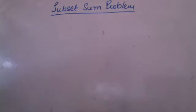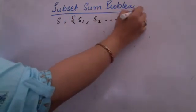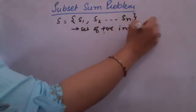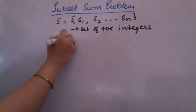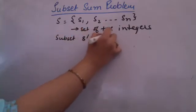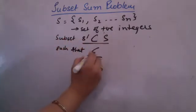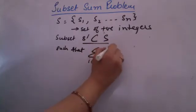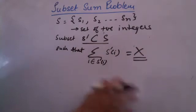There is a subset sum problem in which there is a given set S of certain elements S1, S2, ..., Sn, where this is a set of positive integers. We have to find a subset S' of S such that the sum of all the elements belonging to this subset is equal to some preset value X. This is the subset sum problem.